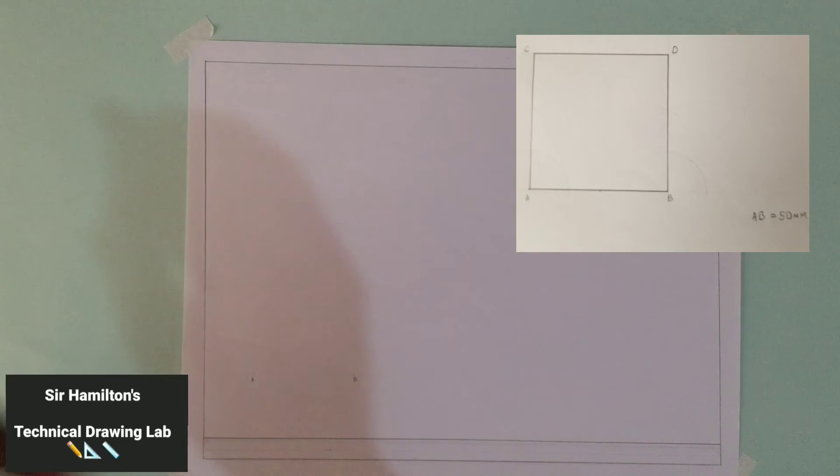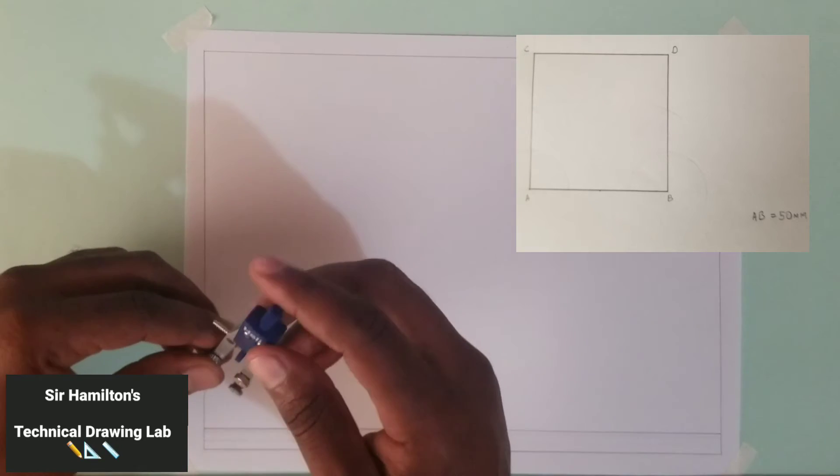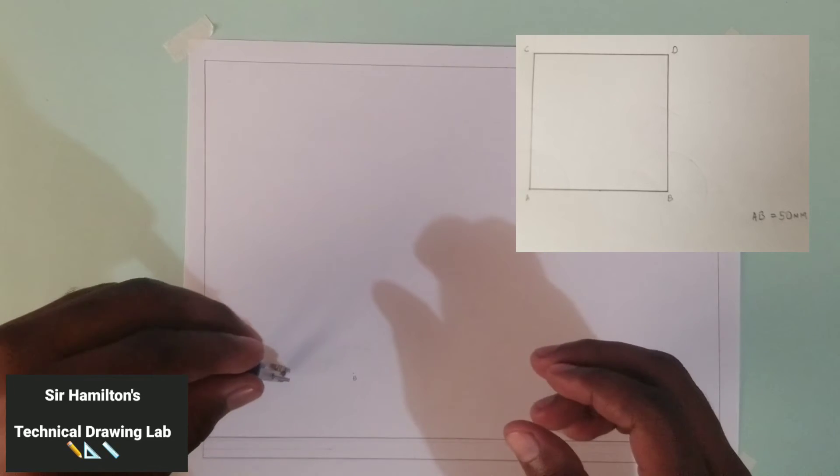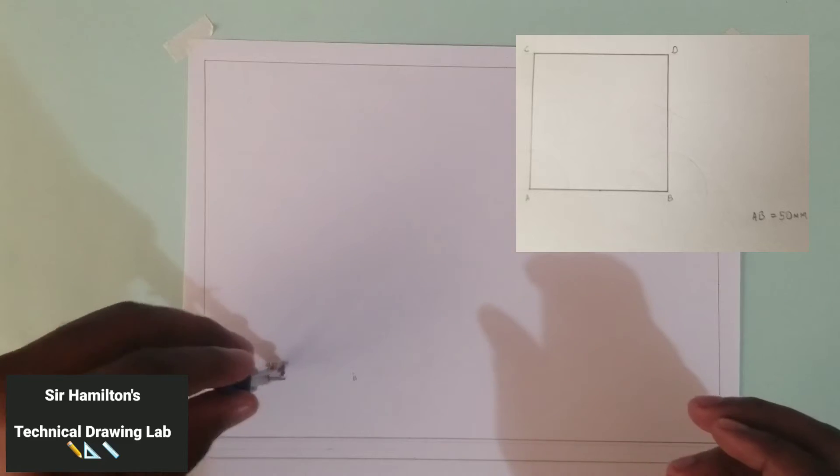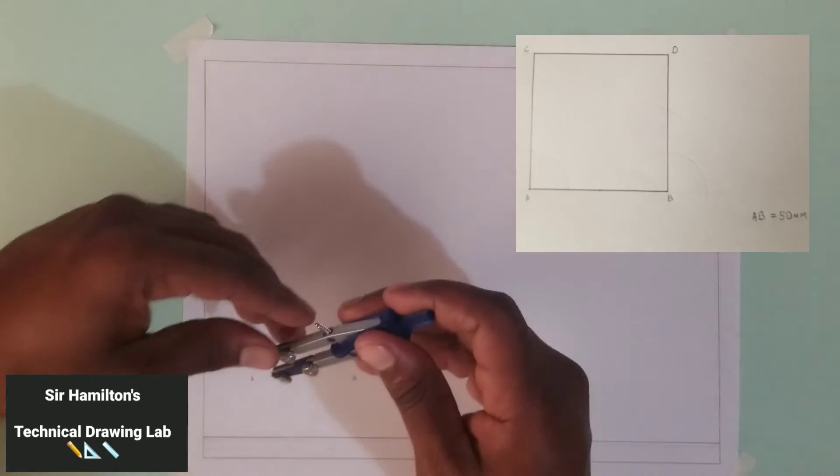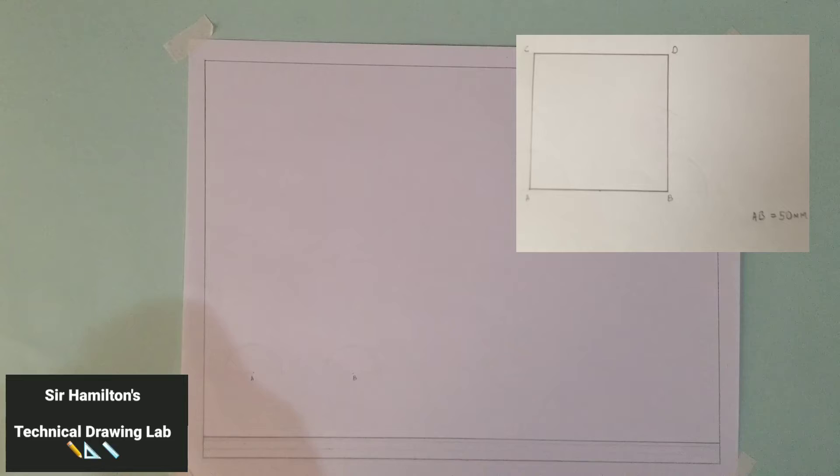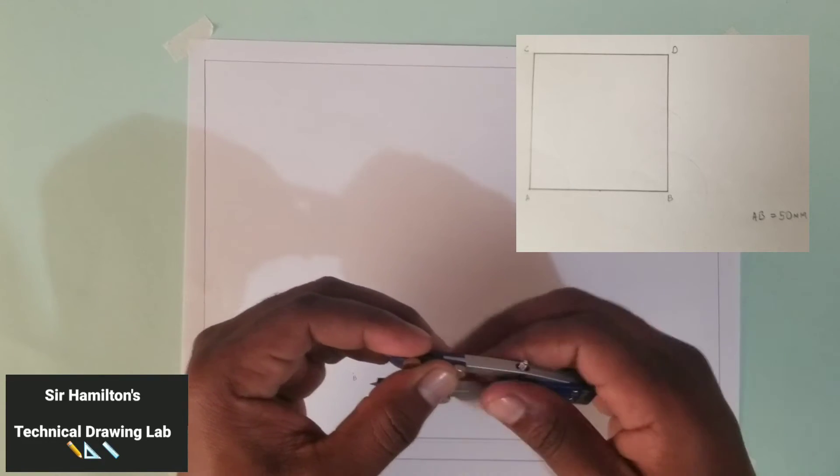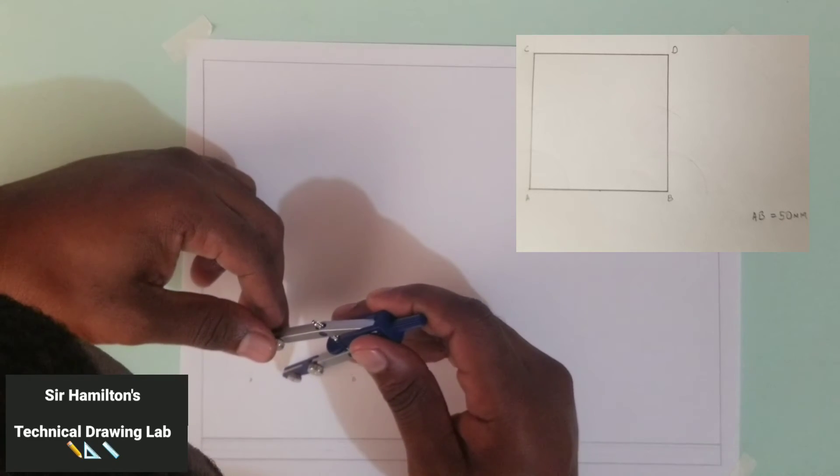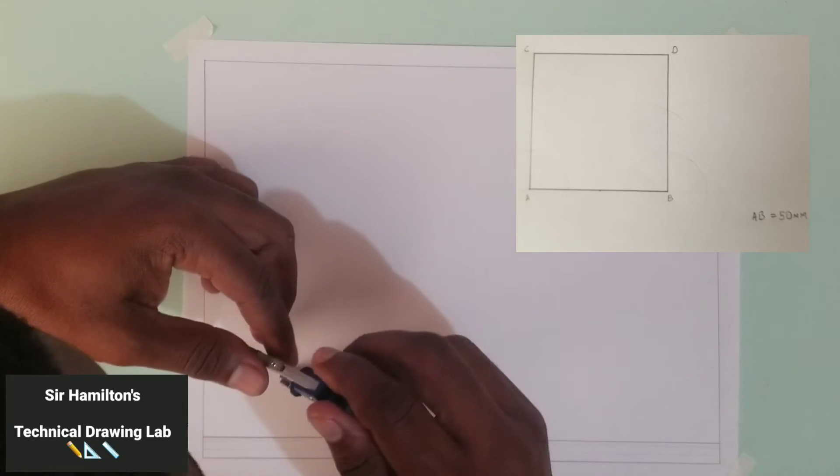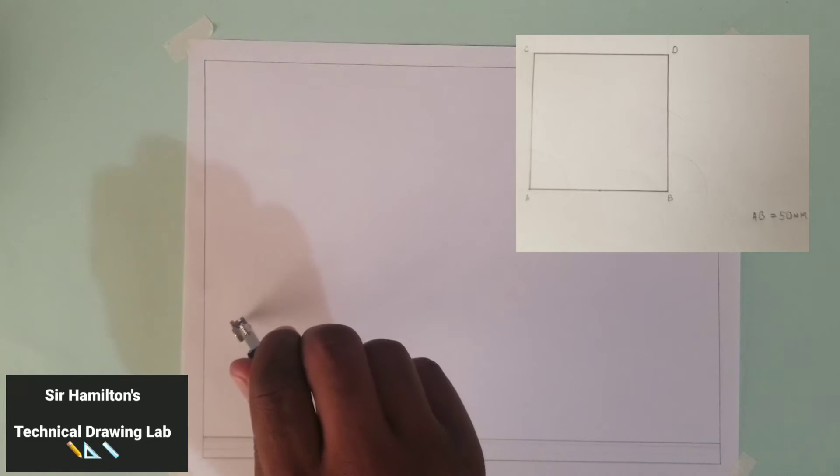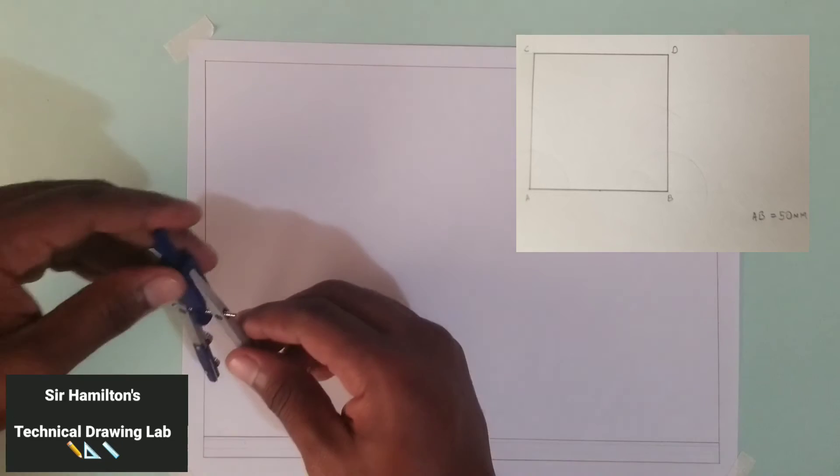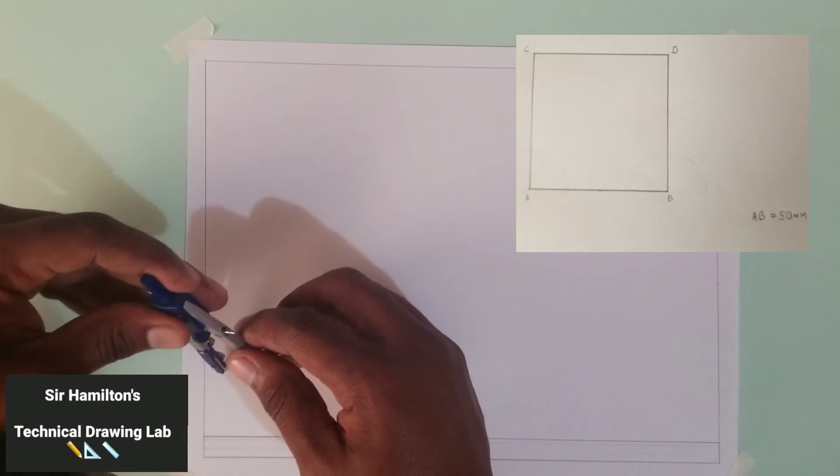All right, so after scribing that arc, what I'm going to do next is I am going to put my compass at this point where my arc intersected my starting line. I'm going to scribe an arc like so, then my compass goes here at the second point and scribe an arc. Be sure not to shift your compass as this will alter the accuracy.